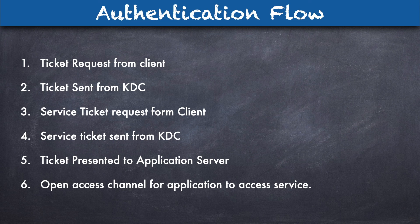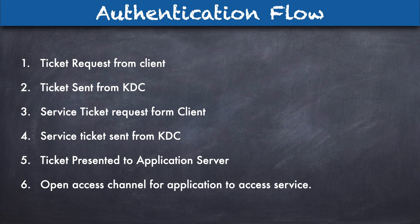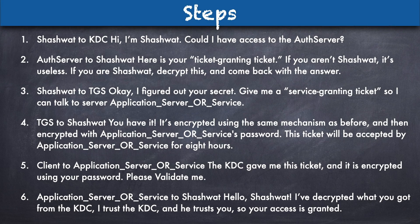This is the basic flow: the client sends a ticket request; the ticket request is sent to the KDC (Key Distribution Center); the service ticket request is then sent to the KDC; and the ticket is presented to the application server. Once the application server confirms the ticket is valid, the first two steps are tickets for the user and the next two are tickets for the services the user wants to access. Once the KDC validates it, the user can access the resources.